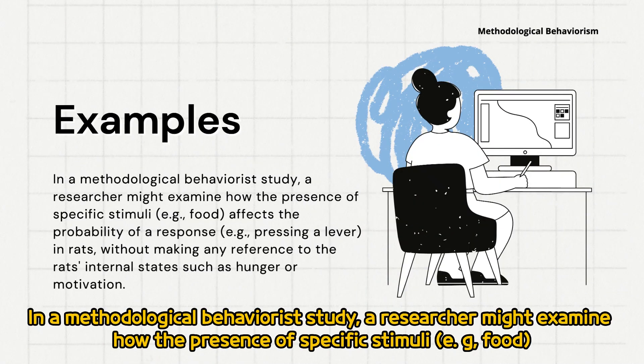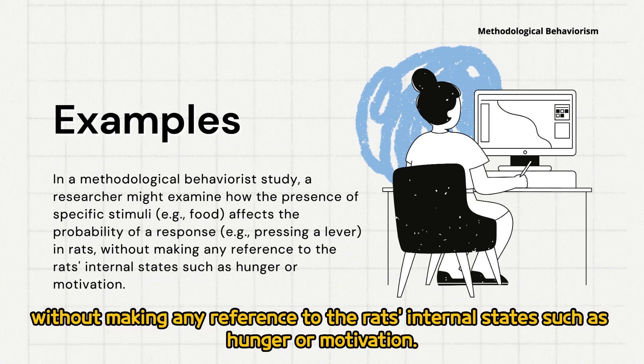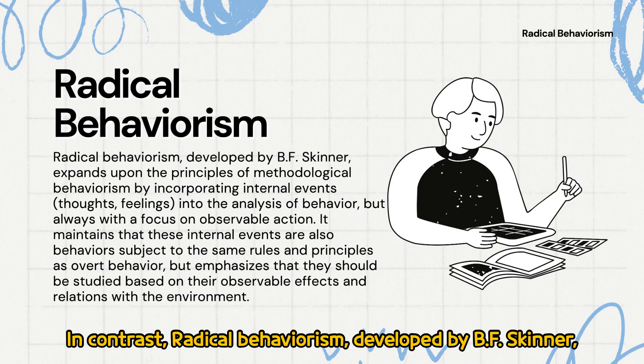In a methodological behaviorist study, a researcher might examine how the presence of specific stimuli — for example, food — affects the probability of a response, such as pressing a lever in rats, without making any reference to the rats' internal states such as hunger or motivation.